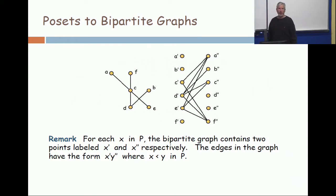As I comment at the bottom, for each element x in the poset, you put an x prime on one side and an x double prime on the other side. Note there are no edges between x prime and x double prime.